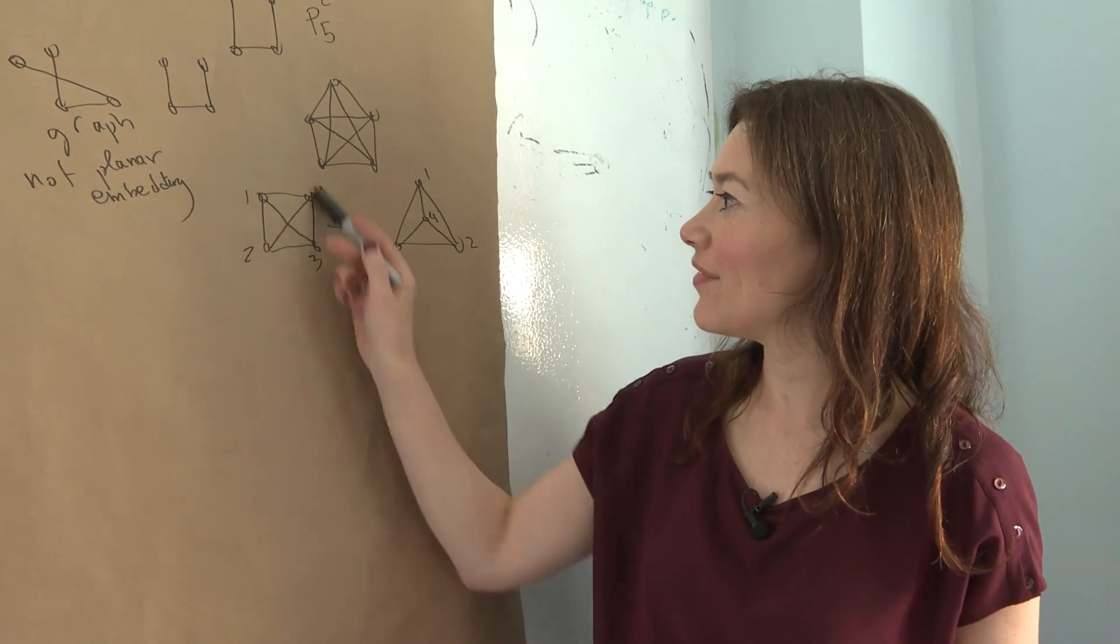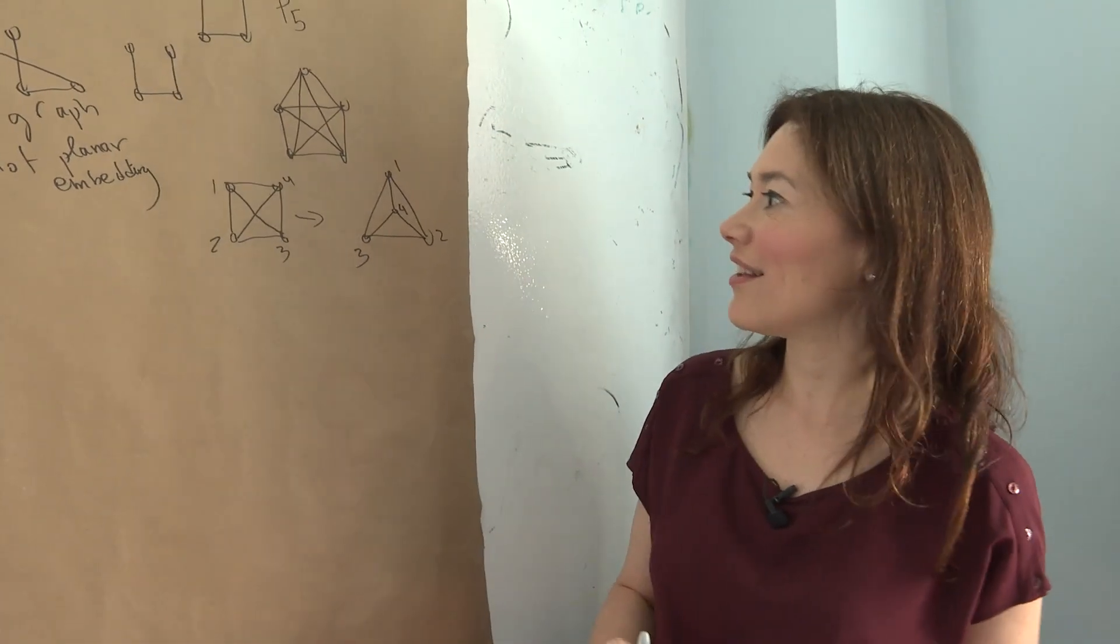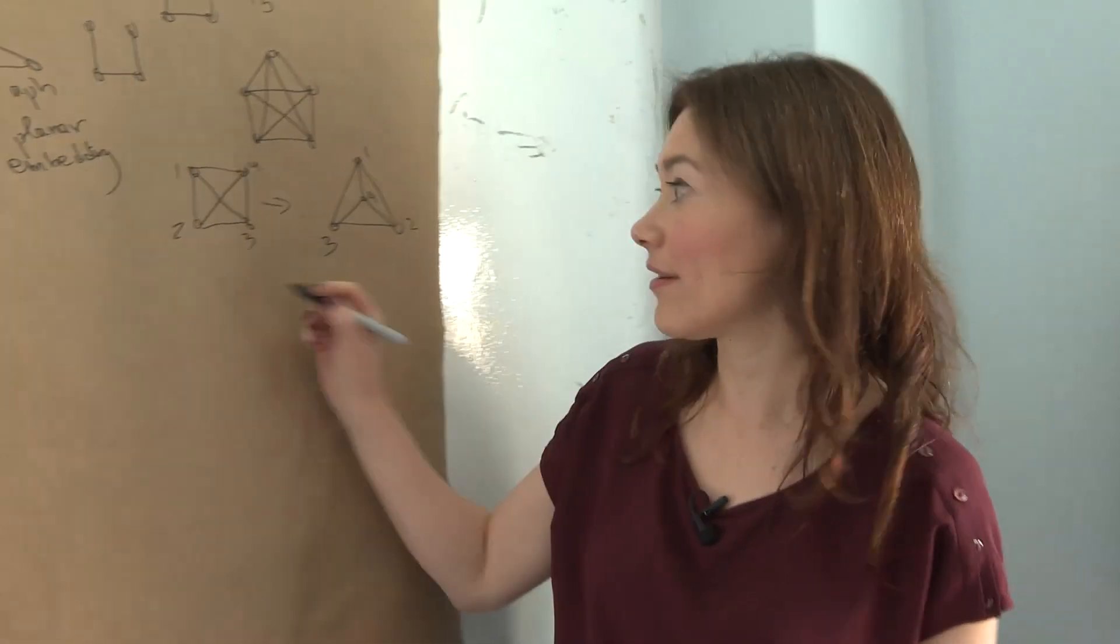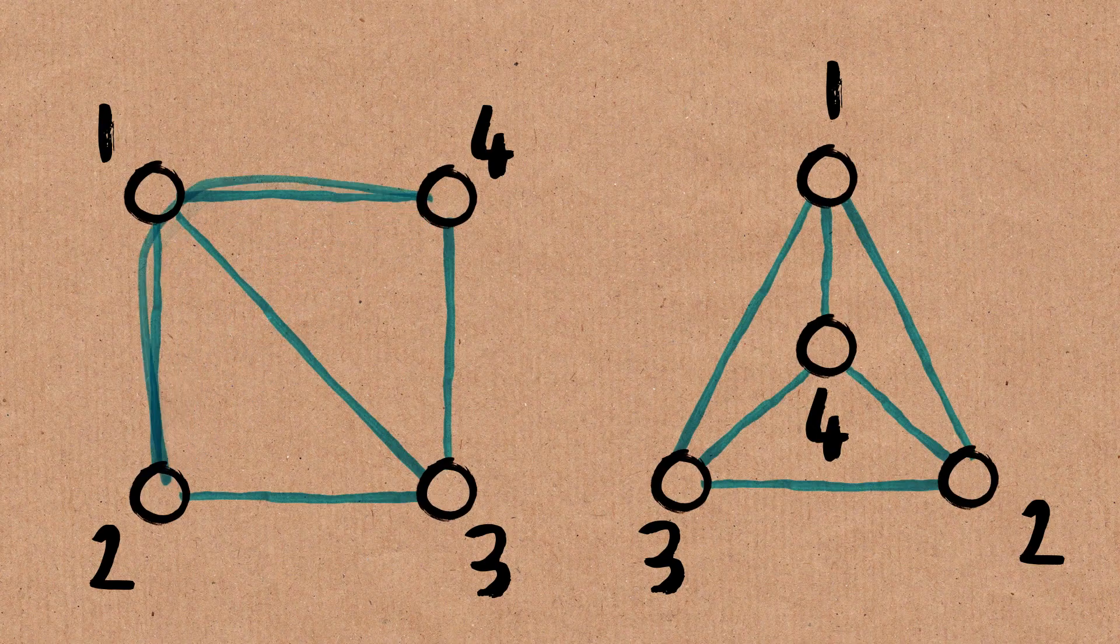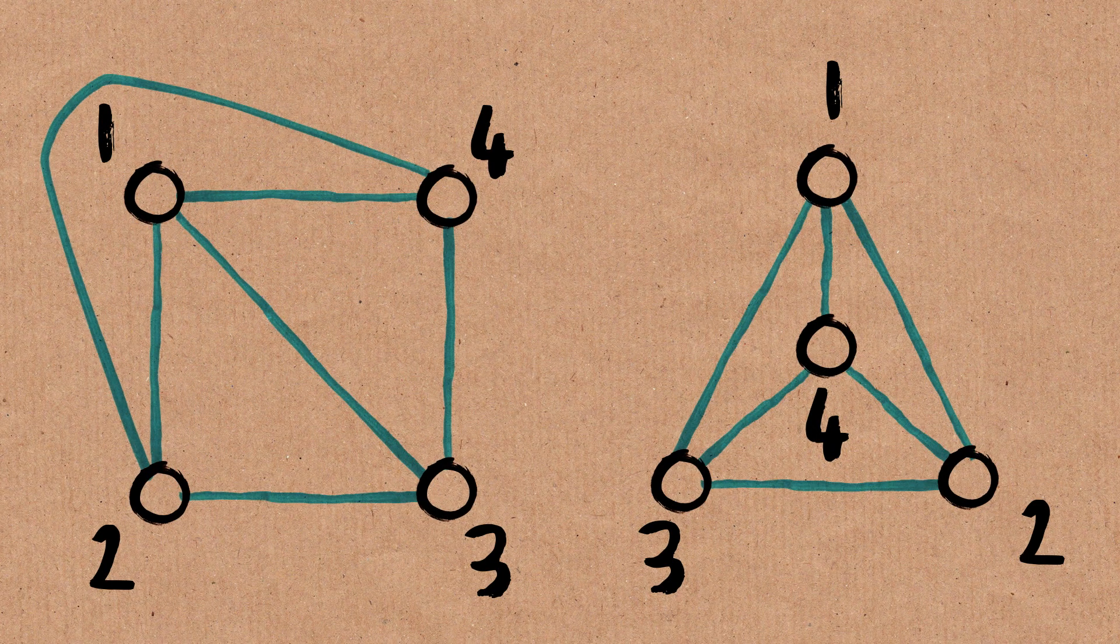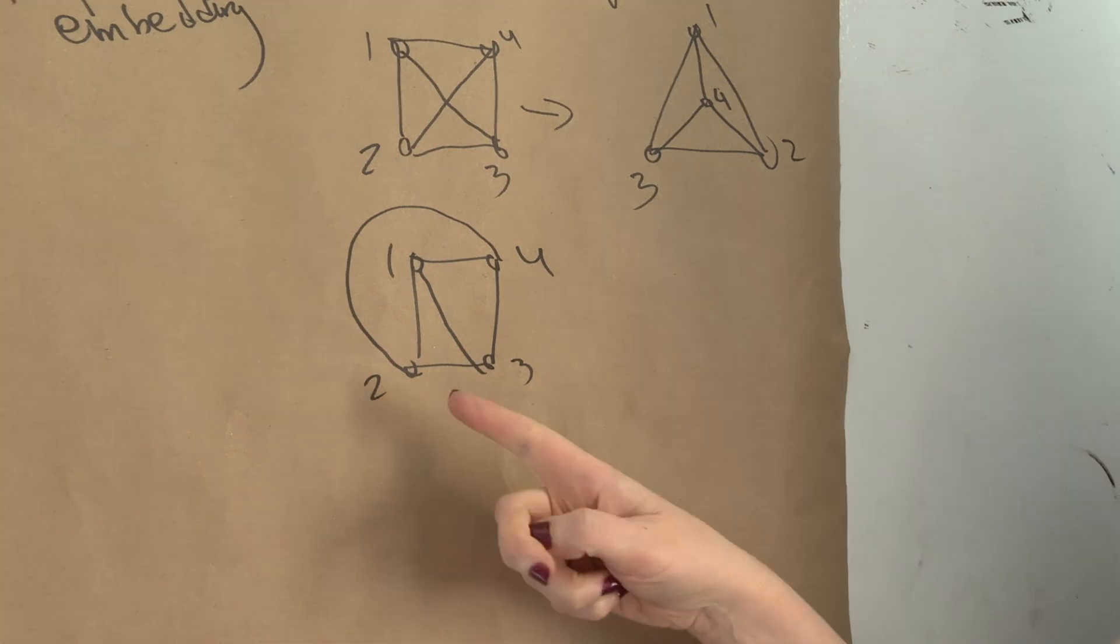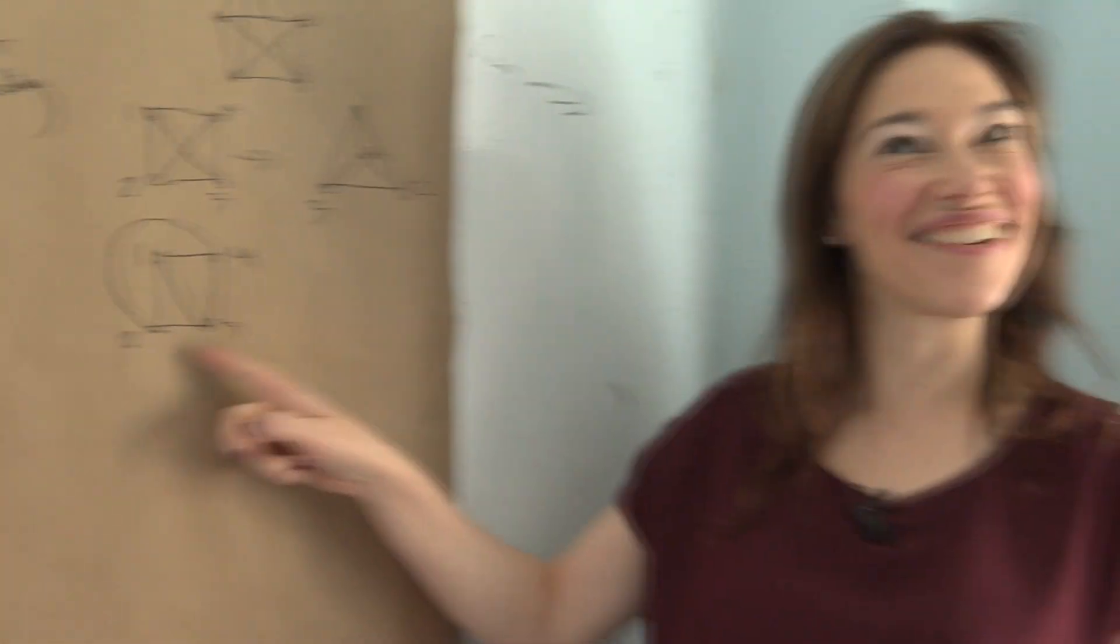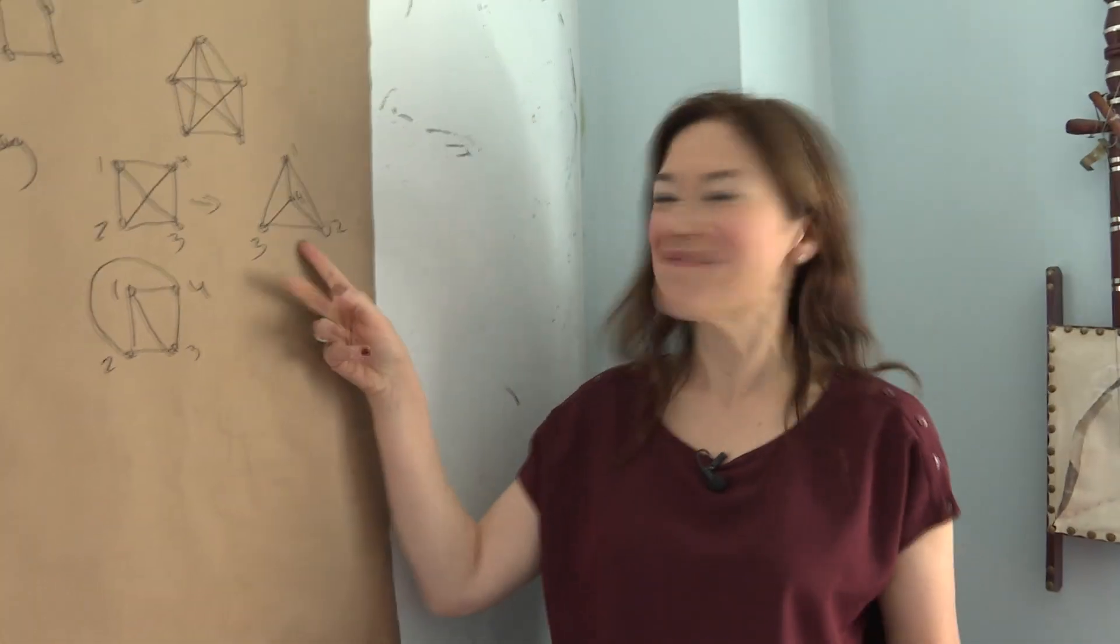So you're asking me, could I leave these vertices in place and just make the edges? Yes. So what I would do is, I could make this completely asymmetric, ugly drawing, or this beautiful drawing.